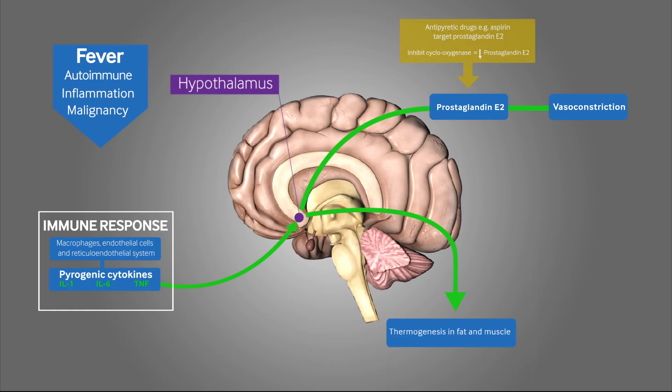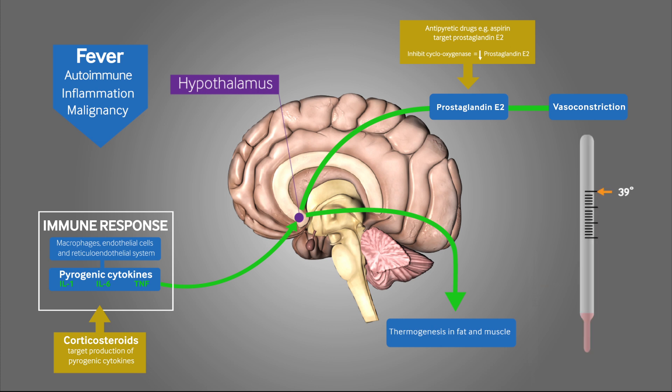In order to mediate fever, antipyretics target prostaglandin E2 levels, whilst corticosteroids target the production of pyrogenic cytokines. Sweating and vasodilation help to reduce the body temperature back to normal. This is a summary of the pathophysiology of fever.